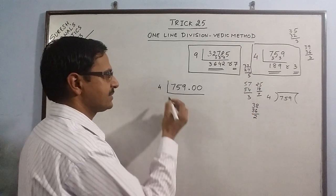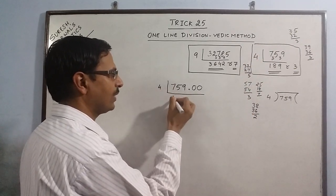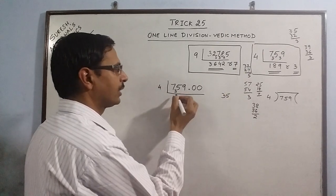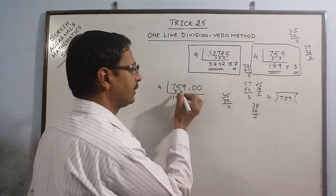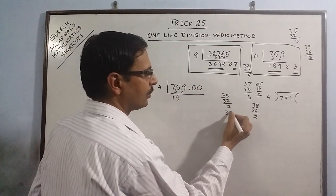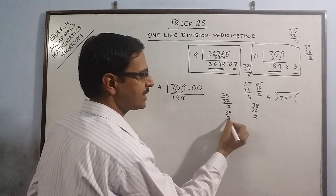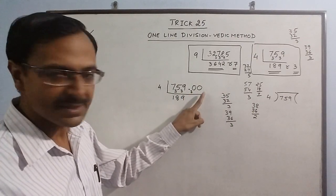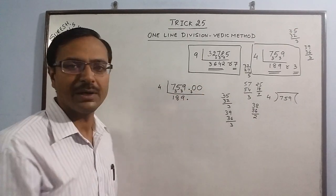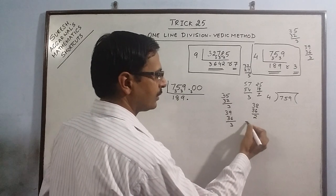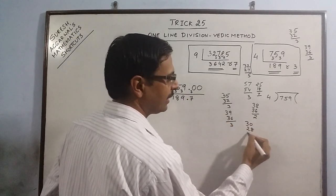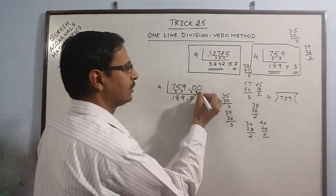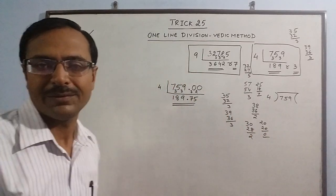Now carry on the division as it is: 759 divided by 4, so 4 ones are 4, 7 minus 4 is 3, we write here, so this is 35. So 4 eights are 32, 3 we write here. So 4 nines are 36, left behind with 3, so 3 we write here. And now we have crossed the decimal place, so this decimal we will have to carry forward in the quotient also. So now this is 30, so 4 sevens are 28, left behind with 2. 2, so 20. 4 fives are 20. So this is the exact quotient which is found in one line.